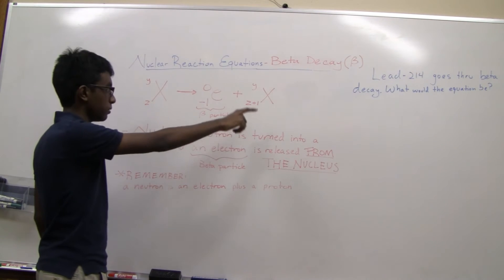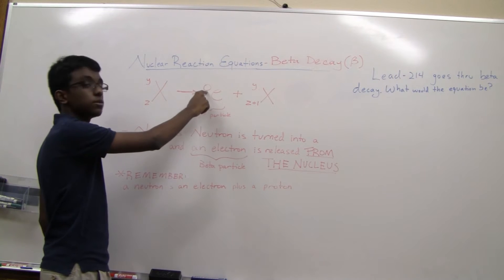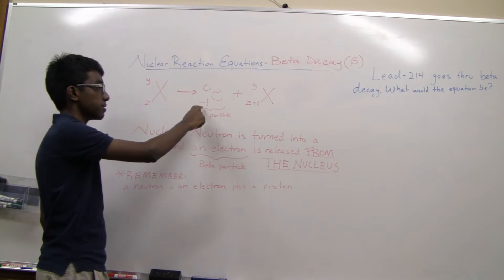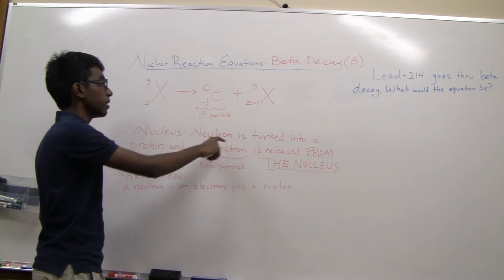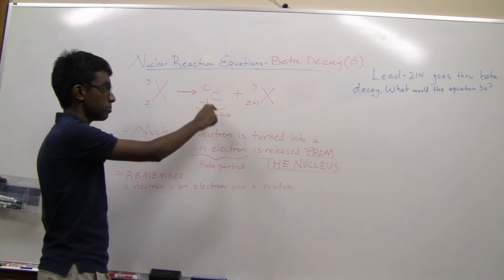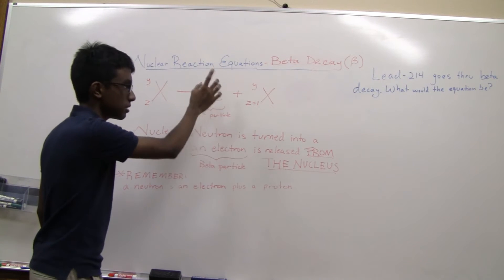You're going to release your beta particle. A beta particle has a mass number of zero, but it actually has a minus one for its atomic number. You're going to write E, because that's the symbol for a beta particle, because it's an electron.